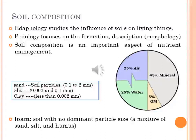Soil particles that range from 0.1 to 2 mm in diameter are called sand. Soil particles between 0.002 and 0.1 mm are called silt. Even smaller particles less than 0.002 mm in diameter are called clay particles.